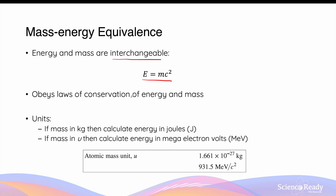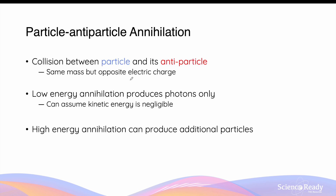When using this equation, mass can be given in kilograms or atomic mass units. If mass is in kilograms, then the energy we calculate will be in joules, and if the mass is in atomic mass units, the energy can be found in mega electron volts.